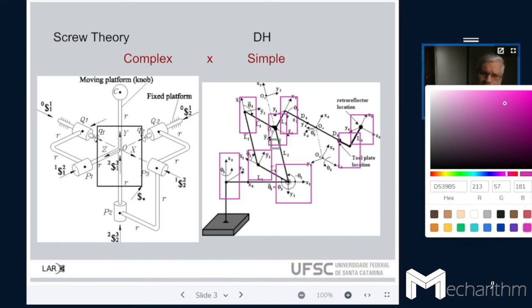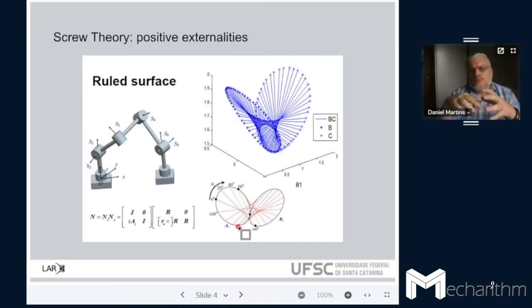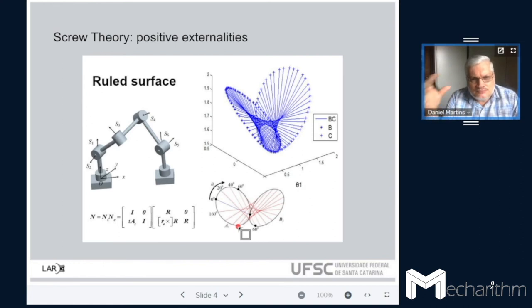And the other point is that the Denavit-Hartenberg and others are most concerned with the kinematics of the robots. So whenever you go in the rabbit hole of screw theory, you understand you have lots of positive externalities. You have a mathematical approach, you have mathematical tools to solve, and you think about the problem of path generation, designing the joints,